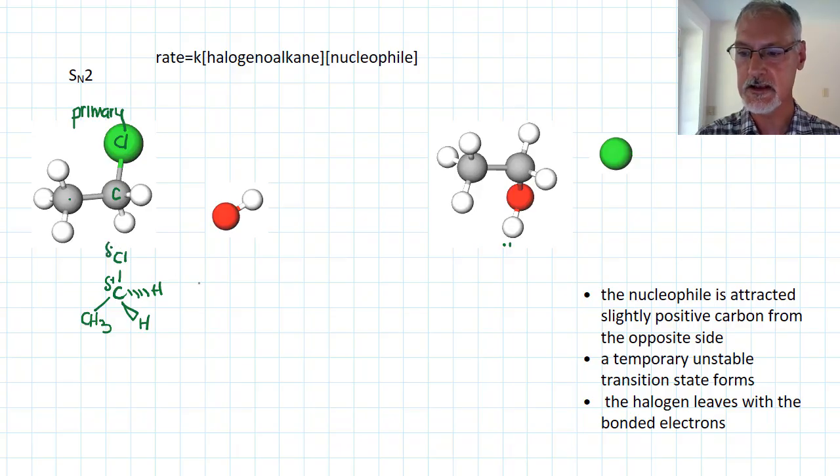So there's the halogenoalkane, and remember that this carbon is slightly positive because the electrons are drawn towards the chlorine, which is slightly negative. My hydroxide ion possessing a negative charge and those unbonded electrons is attracted to that site.